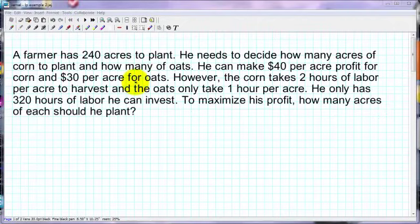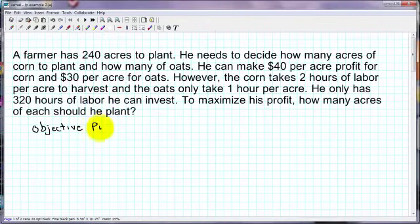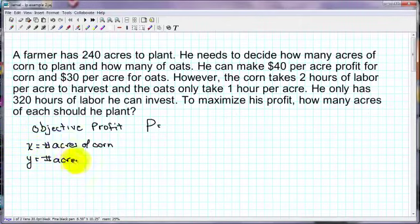So on a linear programming problem, we need an objective function. That's what we're going to optimize. So in this case, our objective is to maximize profit. So our objective is profit. So we need an equation for profit. Let's decide here, we're going to let x be our number of acres of corn. And y will be our number of acres of oats. So the profit, we get $40 of profit per acre for corn. So 40x for our profit, 40 times the number of acres of corn. And then we get $30 of profit for the oats, which is our y value. So this is our objective function.